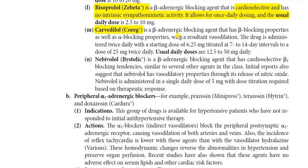Carvedilol is a beta blocking agent that also has alpha blocking activity, resulting in vasodilation — it is both a beta blocker and an alpha blocker. The drug is administered twice daily with a starting dose of 6.25 mg, titrated at 7 to 14 day intervals to a dose of 25 mg twice daily.